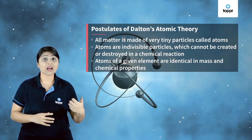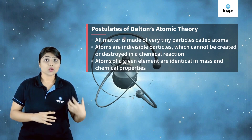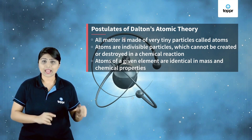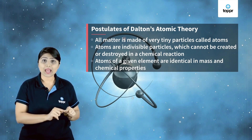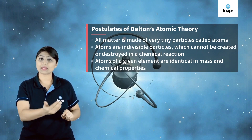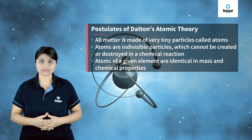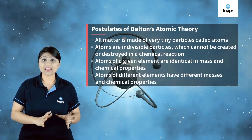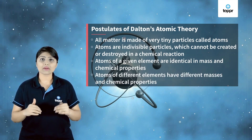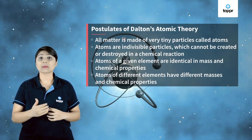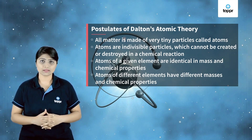Atoms of the same element are identical in mass and chemical properties. For example, gold is made up of gold atoms and all these atoms have the same mass and same chemical properties. Atoms of different elements have different masses and different chemical properties.